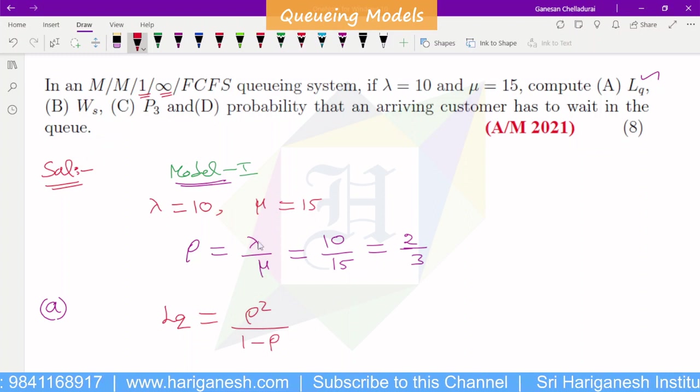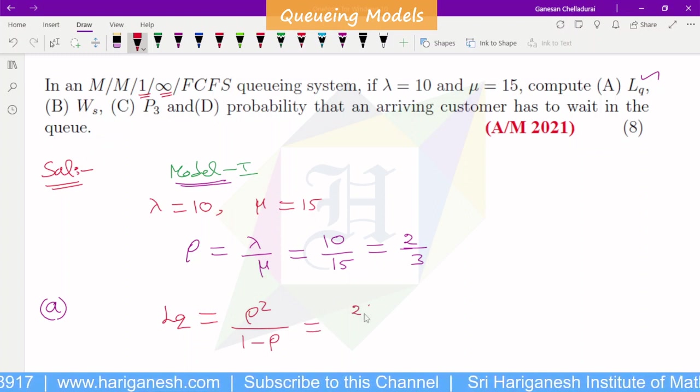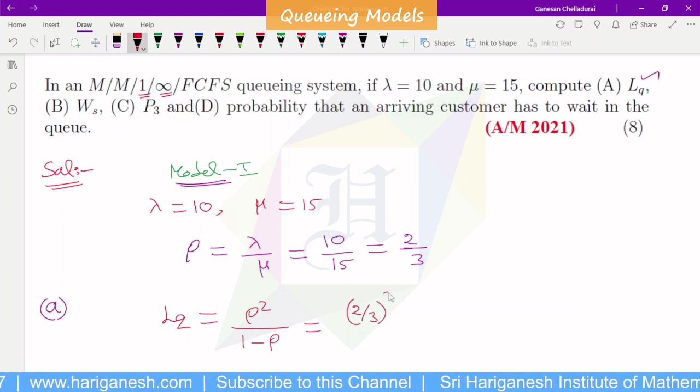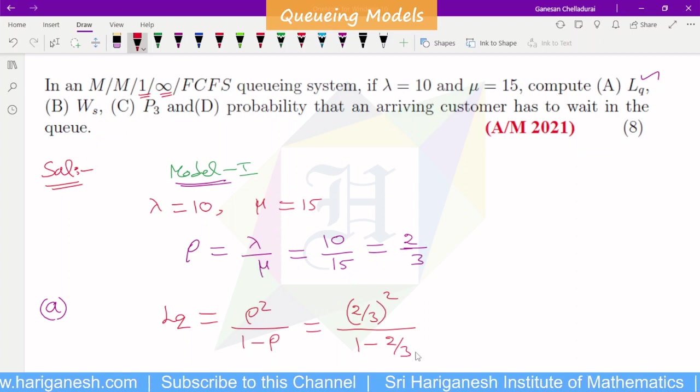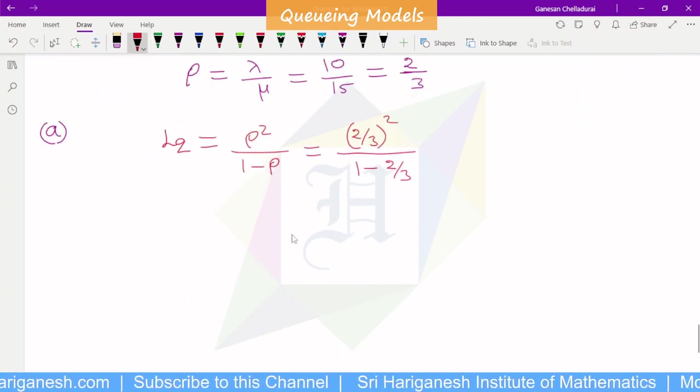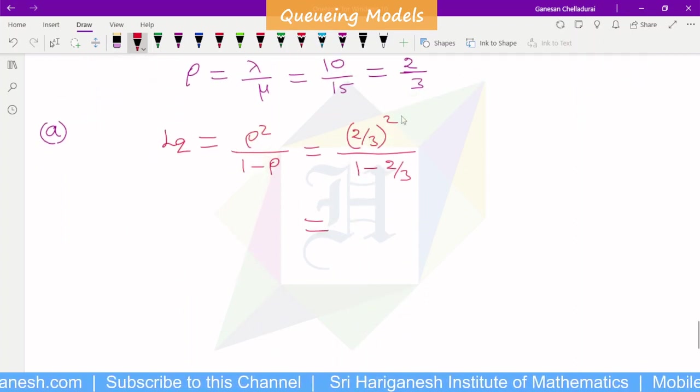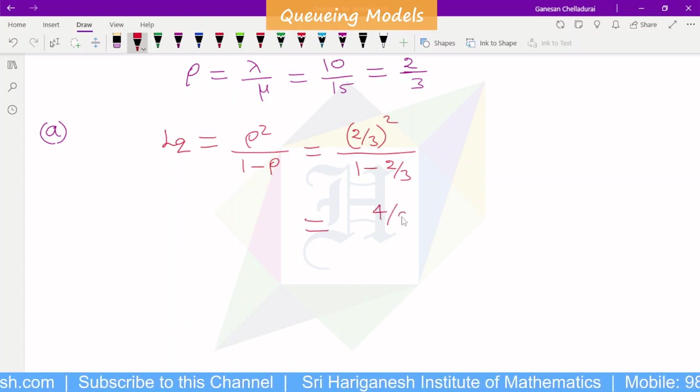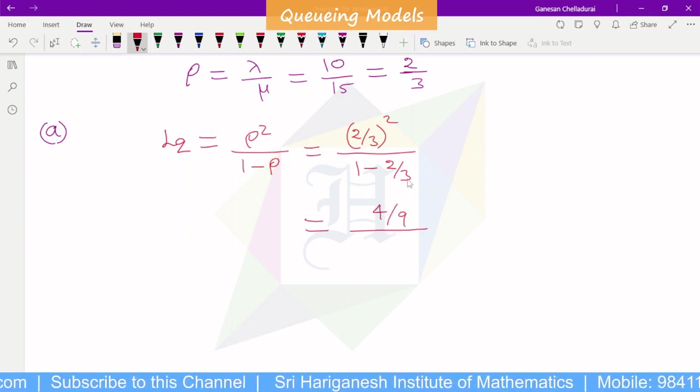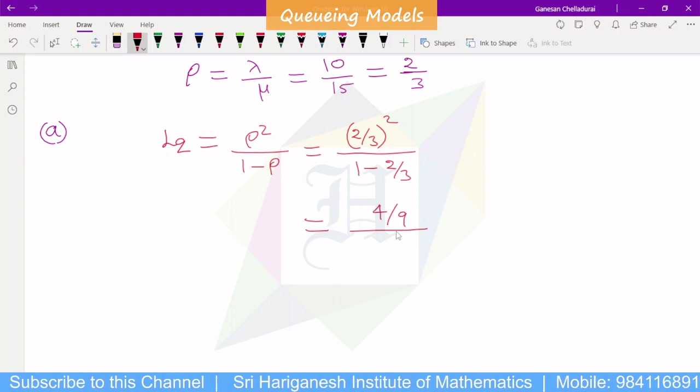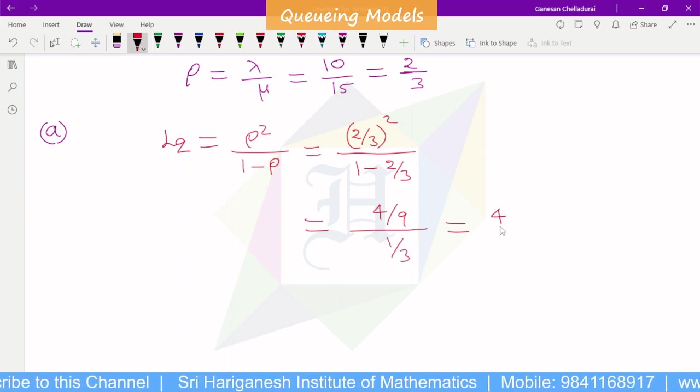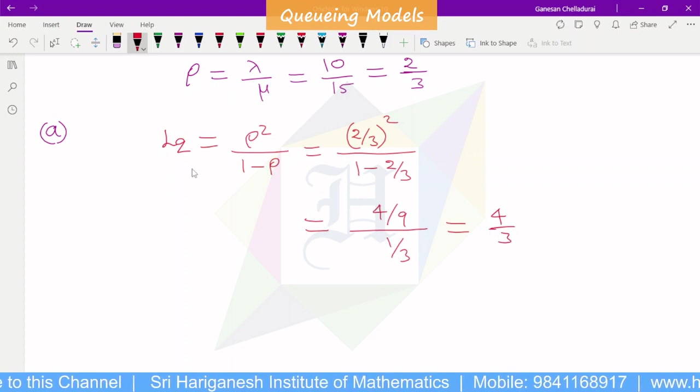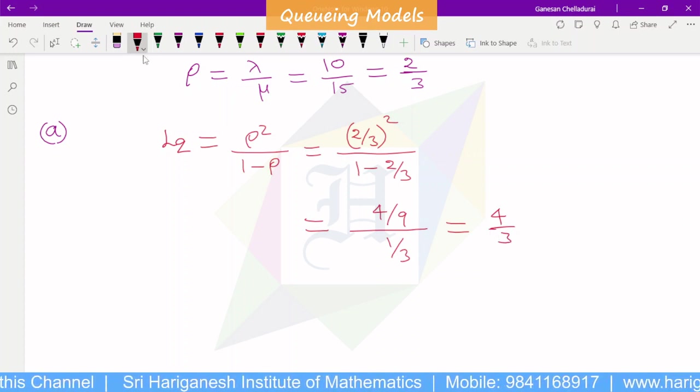So in the formula, 1 minus rho, 2 by 3, so 2 by 3 whole square divided by 1 minus rho, 1 minus 2 by 3. This is simplified. 2 by 3 whole square is 4 by 9 divided by the cross model: 3, 1 into 3, 3 minus 2 is 1 by 3. So in the 3 cancel, 4 by 3. LQ is 4 by 3. First question.